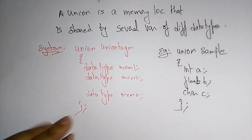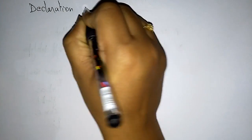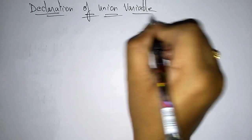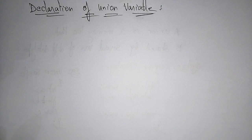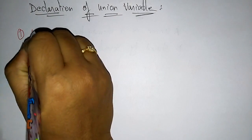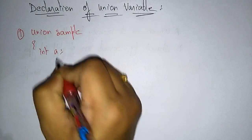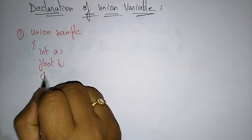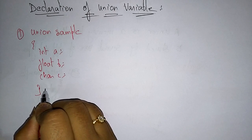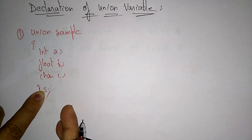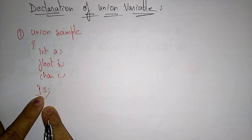This is the syntax of the union. Now let us see the declaration of union variables. Just like structures, the union can also be declared in three ways. The first way is: union sample with int a, float b, character c, and s is the union variable name with a semicolon. So the union 'sample' is declared with variable name s.